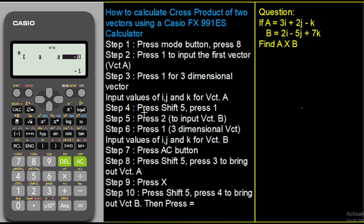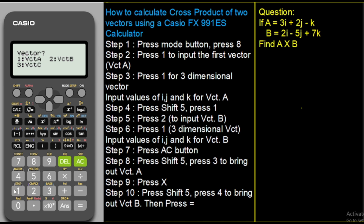Now we move on to inputting vector B. Press the shift button and then press 5. You'll see options: 1 is for dimension and 2 is for data. Press 1 for dimension, then press 2 to select vector B. Vector B is also a three-dimensional vector with I, J, K components, so press 1 for three-dimensional vector.